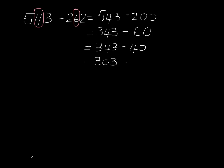But I need to remember that I have only taken away 40 and I need to take away 60, so I still have another 20 to subtract from my sum. So I know that 300 take away 20 is 280, therefore 303 take away 20 is 283.